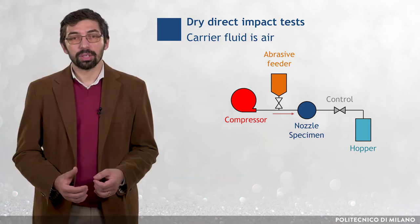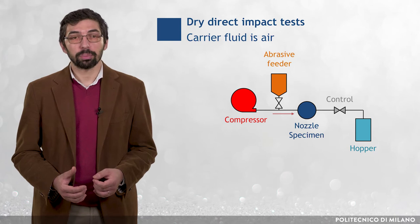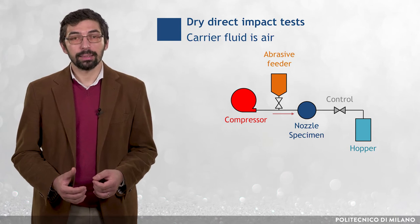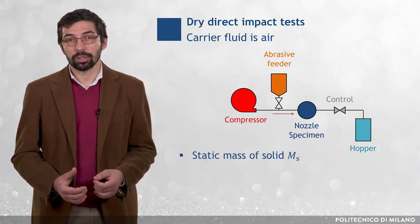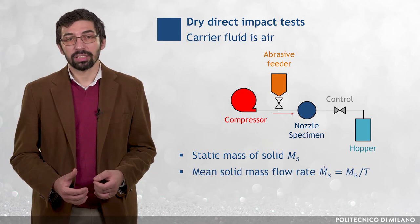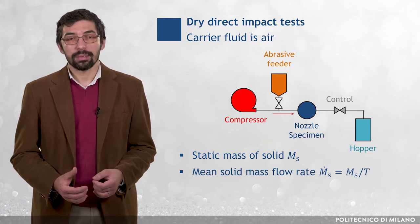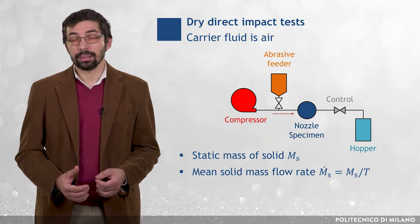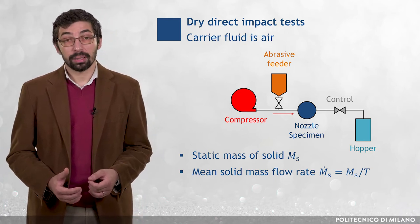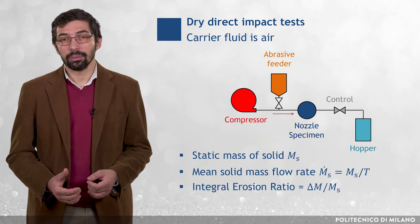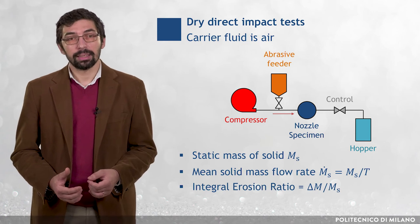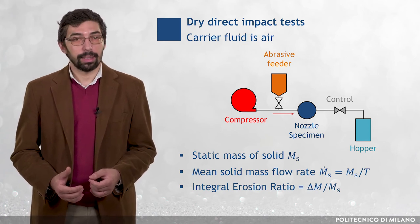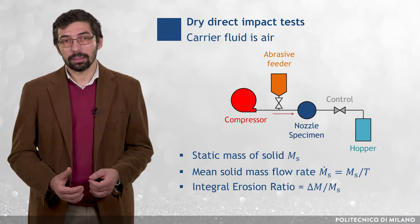Due to the setup configuration, the amount of solids in the flow is usually expressed in terms of total static mass of solids ms, or the mean solid mass flow rate dot-ms, that is the total solid mass divided by the testing time t. The integral erosion ratio is immediately calculated as the mass removal from the sample Δm divided by ms.